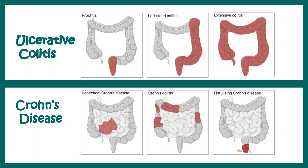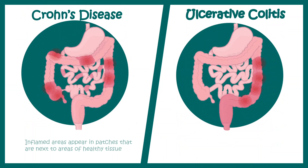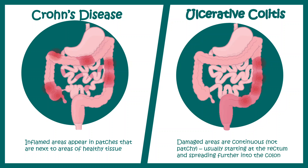There are even subdivisions of ulcerative colitis and Crohn's disease, but we'll keep things simple here. In Crohn's disease the inflamed areas appear in patches, forming a salt and pepper pattern with healthy tissue. In ulcerative colitis, the inflamed tissue is in continuum — one continuous portion of inflamed tissue.